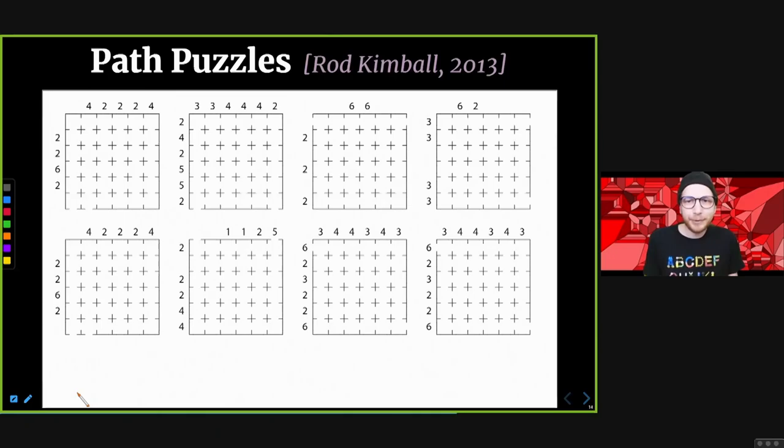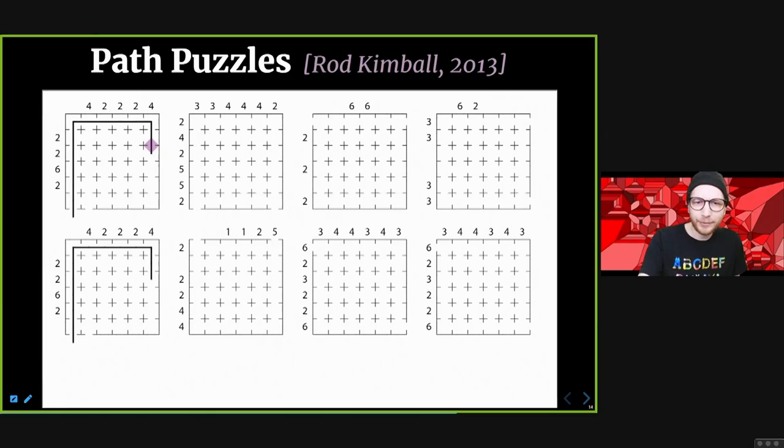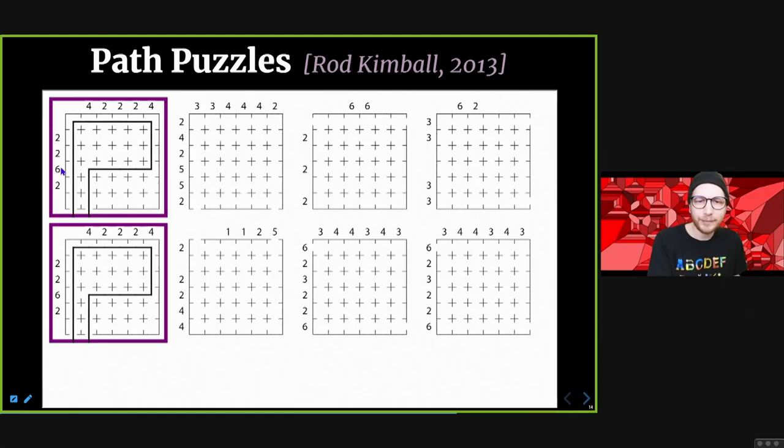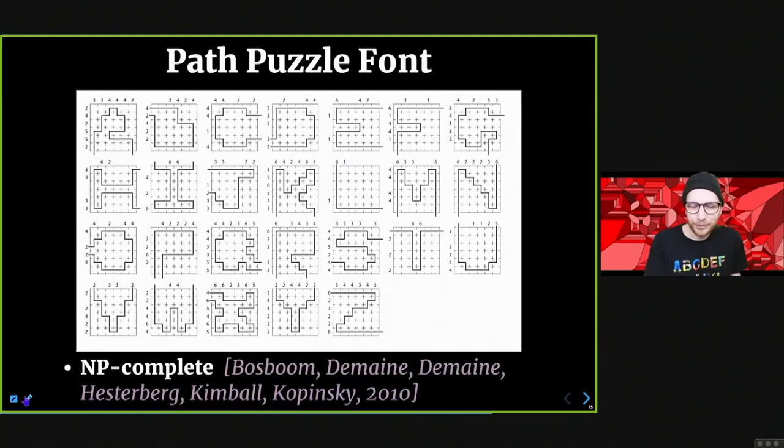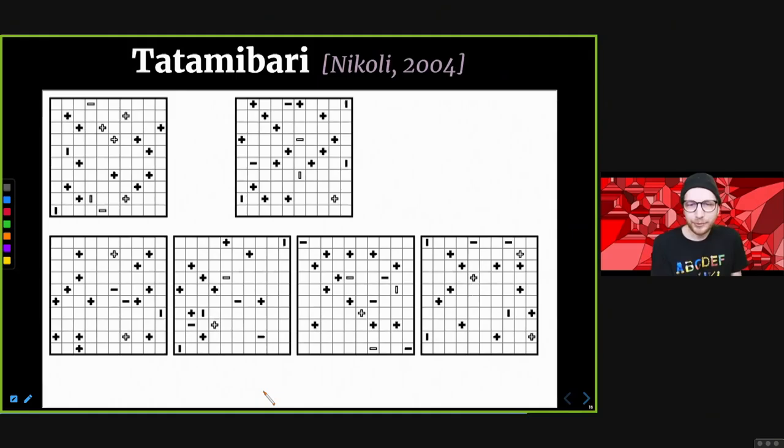Next puzzle is path puzzles: you want to find a single path from the entrance to the exit such that in each row and column you have exactly the specified number of occupied pixels. It's a puzzle by Rod Kimball of the Flying Karamazov Brothers, who often attends Gathering for Gardner. In this case we get 'path puzzle' as a full alphabet, paired with an NP-completeness result done together with Rod.